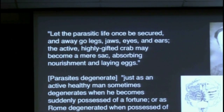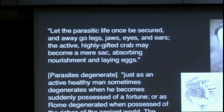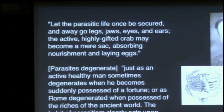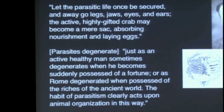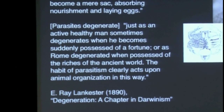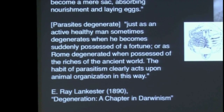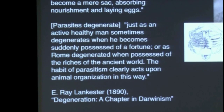He wrote: 'Let the parasitic life once be secured and away go legs, jaws, eyes, and ears — the active, highly gifted crab becomes a mere sack, absorbing nourishment and laying aim.' He later refers to how parasites degenerate just as an active, healthy man sometimes degenerates when he becomes suddenly possessed of a fortune, or as Rome degenerated when possessed of the riches of the ancient world. The habit of parasitism clearly acts upon animal organization in this way.